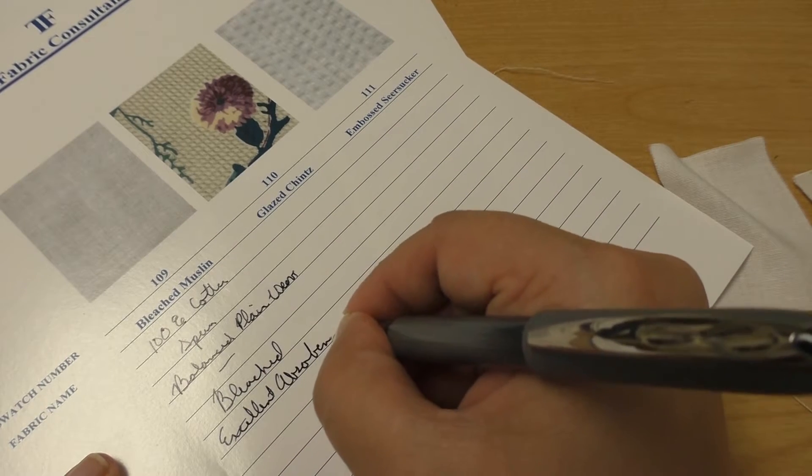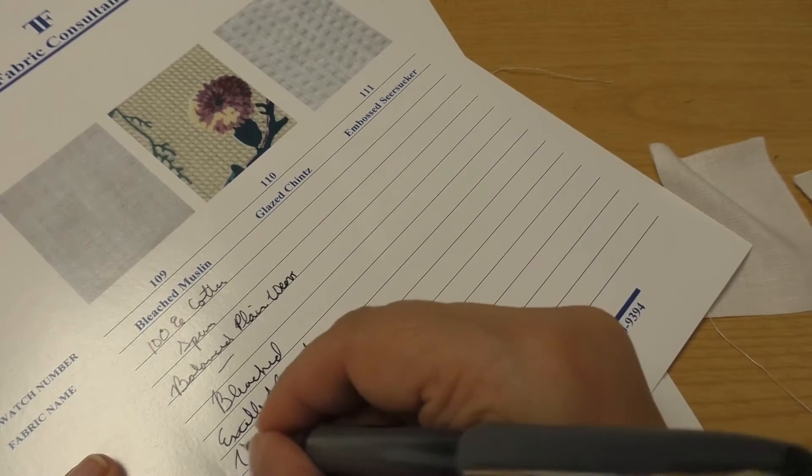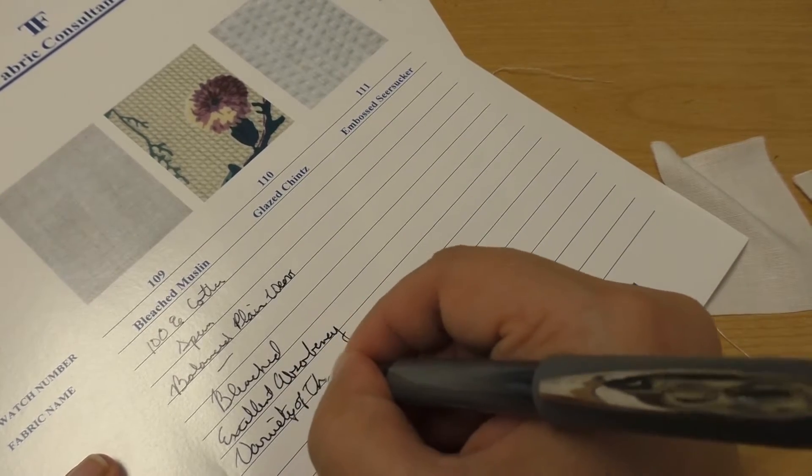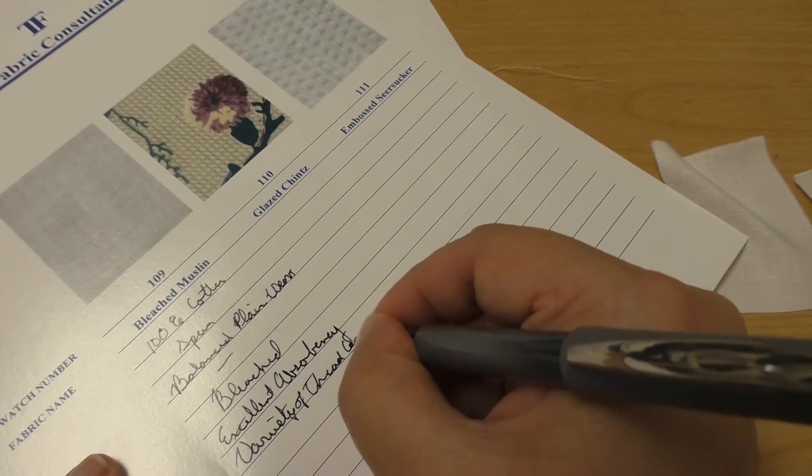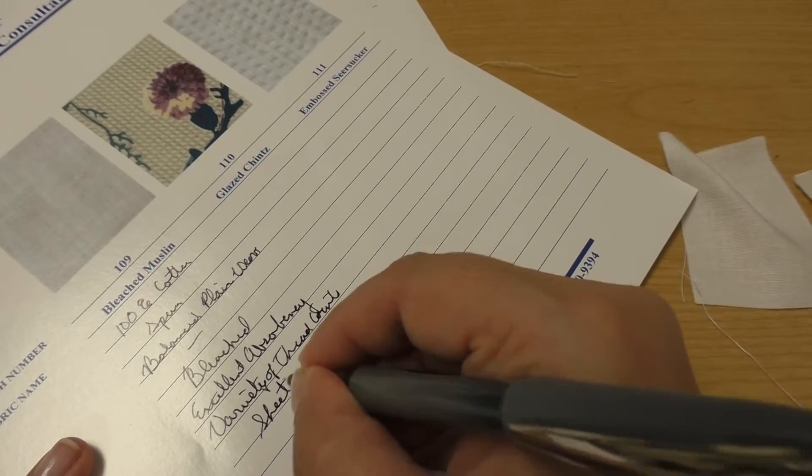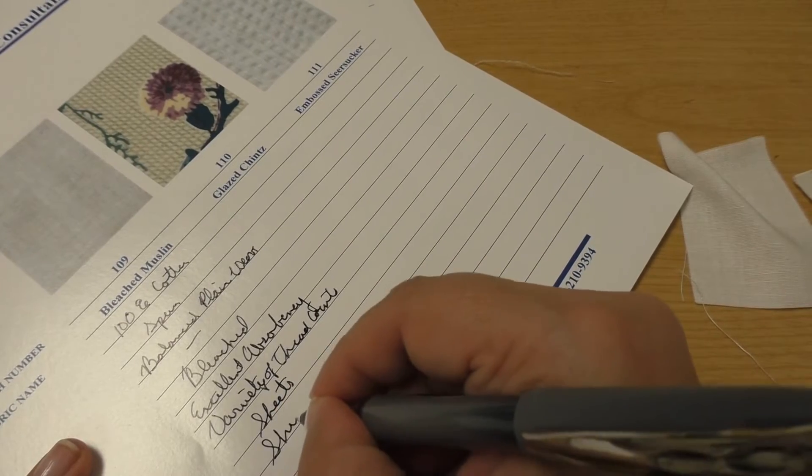It has good absorbency and has a variety of thread counts. You'll notice that it's still muslin because it has no other finish, but it has been bleached, so it's called bleach muslin. This might be used for sheets or for shirts or other things where the pretty color doesn't matter.